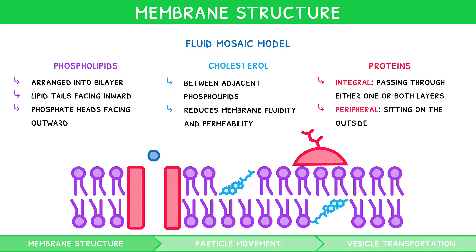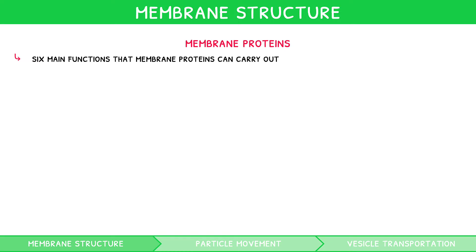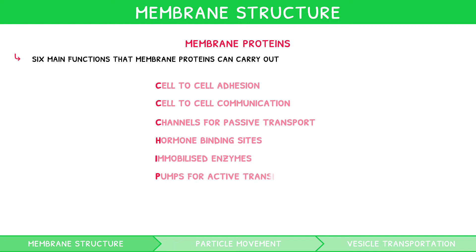However, categorising membrane proteins into simply integral and peripheral is a little crude. In fact, there are six main functions that membrane proteins can carry out. These are best remembered using the mnemonic CC CHIP: cell-to-cell adhesion, cell-to-cell communication, channels for passive transport, hormone binding sites, immobilised enzymes, and pumps for active transport.